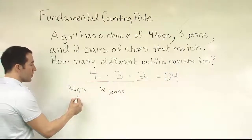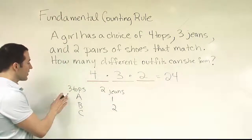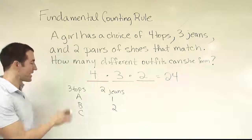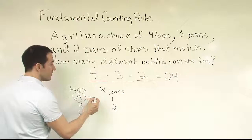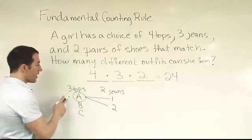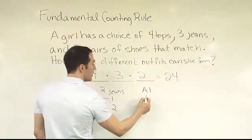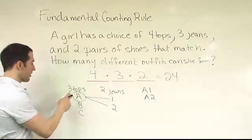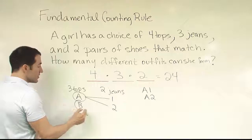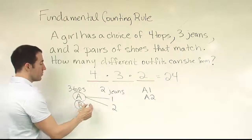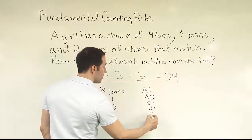Now if we call the tops, tops A, B, and C, and the jeans pair one and two, then we can easily figure out the different possible number of outcomes. We can actually list them. So if she chose top A, with top A she could either choose pair of jeans one or pair of jeans two, and that would form the outfits either A1 or outfit A2. There's two outfits she could get from that pairing. She could have also chosen top B and done the same thing, either picked pair of jeans one or pair of jeans two. That gives you B1, B2.